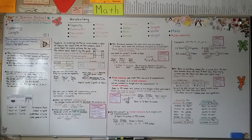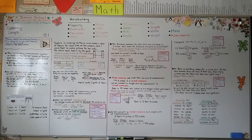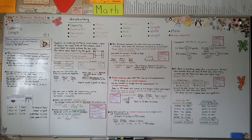I have conversion charts for metric and customary units on my Facebook page in the photo image section, which you can print or copy. Our next lesson, 10.2, will cover customary capacity — fluid ounces, cups, pints, quarts, and gallons. I hope you have a great day and will join me next time. Bye.